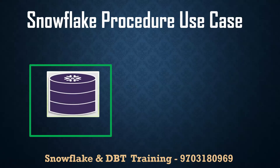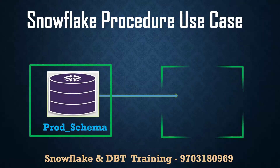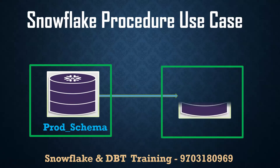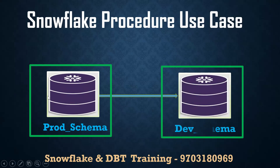The requirement is: I have one prod schema. In this prod schema, assume there are 100 tables with real-time data. My requirement is to take all 100 tables as a backup — without data. I want to copy only the table definition, not the data.